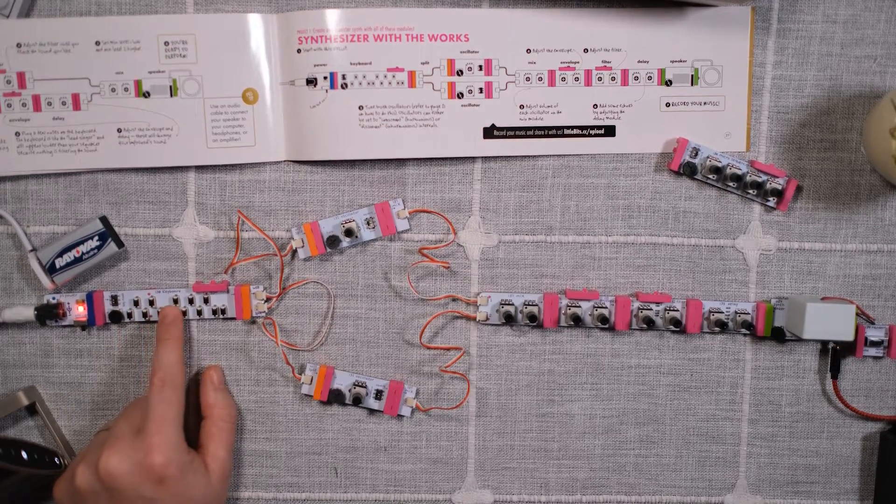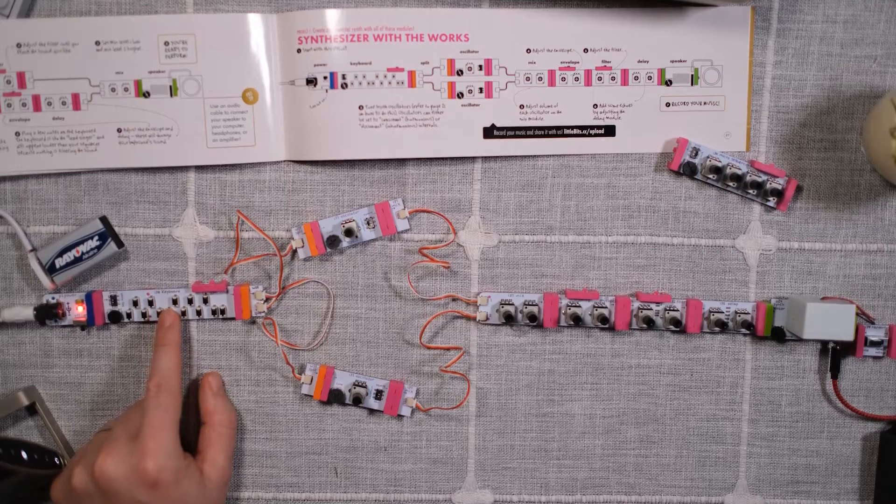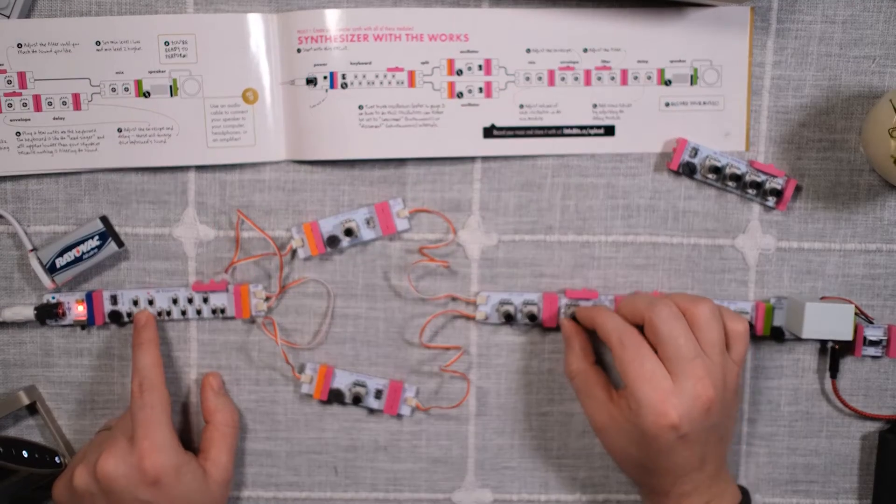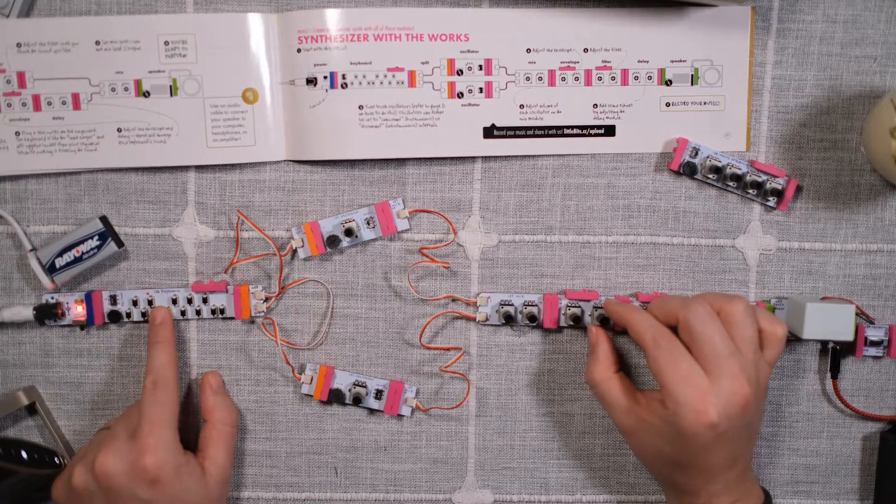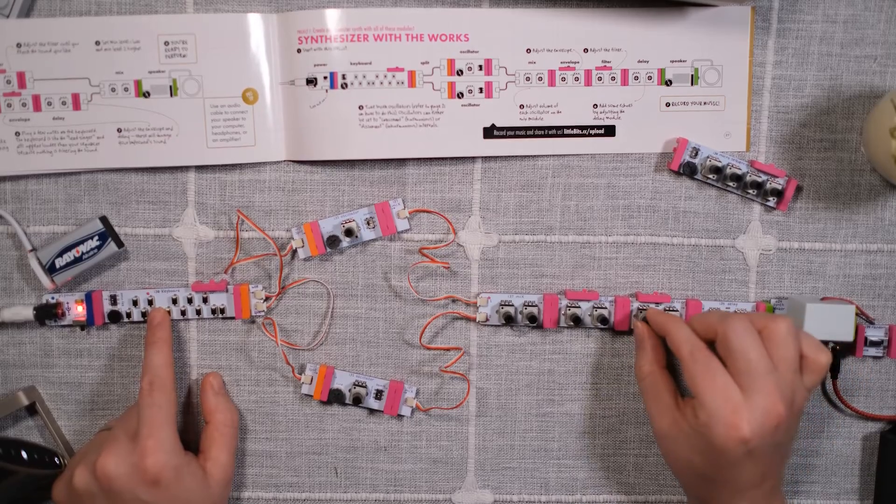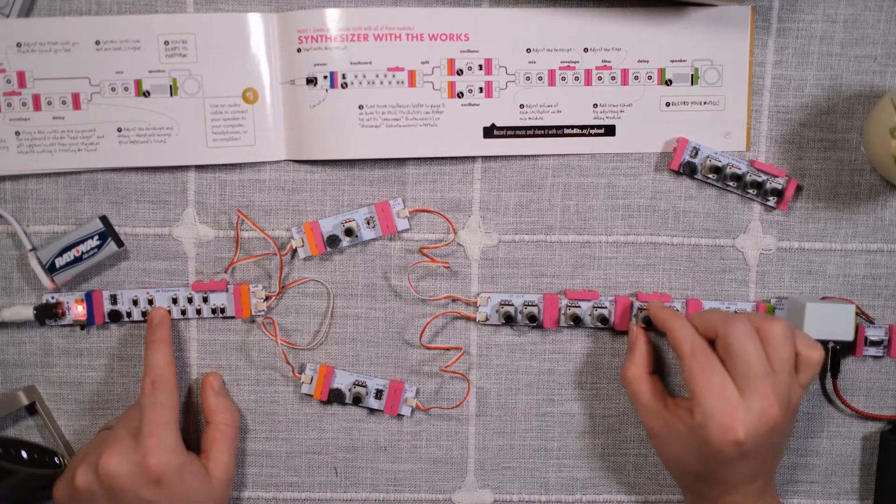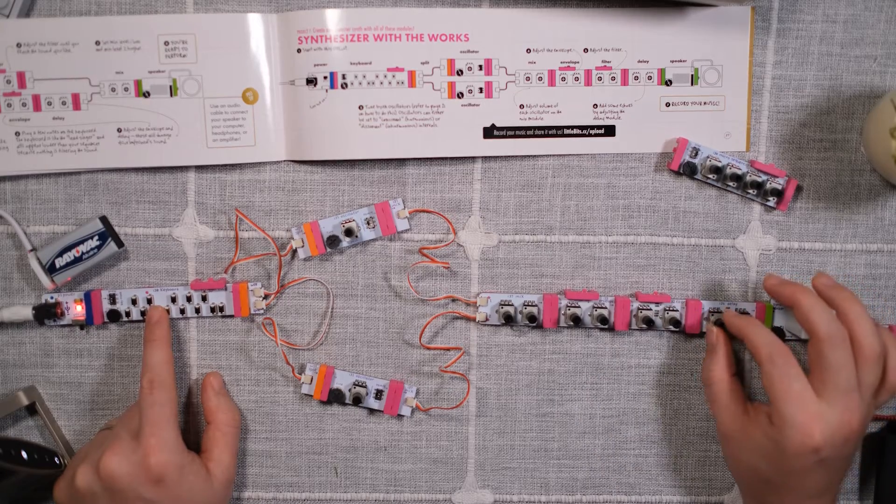And then we can start dialing in the different settings. Got the envelope there, you can make it a little smoother with the filter. Now we can add some delay.